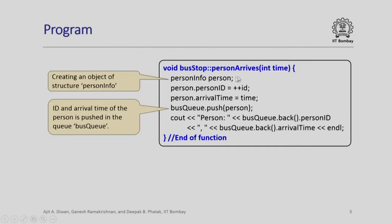We note that bus_stop::ID is initialized to 1000 as an arbitrary base number for assigning IDs to passengers. Next is the person_arrives function: void bus_stop::person_arrives takes time as a parameter. We define a person_info object called person and assign plus-plus ID to person.person_ID. So if the base was 1000, each person arriving is assigned 1001, 1002, 1003, 1004 in sequence. The time passed to this function is assigned to person.arrival_time. We then push this person onto the bus queue and print out the person ID and arrival time.